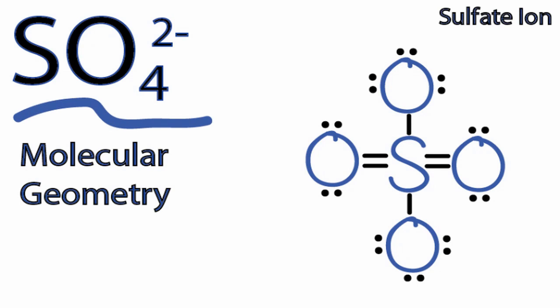For the SO4 2- molecular geometry let's look first at the Lewis structure. When we look at the Lewis structure we can see we have the central sulfur atom and four oxygen atoms around it.